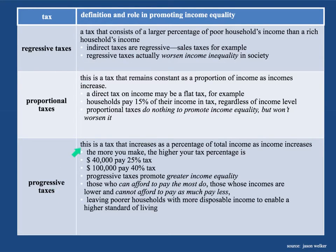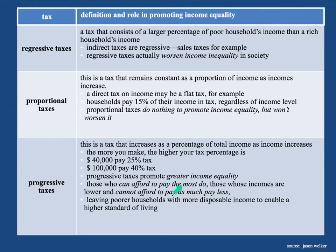Obviously that leaves us with progressive taxes. This is a tax that increases as a percentage of total income as income increases — the more you make, the higher your tax percentage is. Roughly in the United States, if you make $40,000 a year, which is about an average salary for a professional in the U.S., you pay about 25% in tax — federal, state, and local taxes combined. If you make $100,000 a year, you pay 40% tax. So 25% of $40,000 is $10,000 in tax, but if you make $100,000 you pay $40,000 in taxes — four times as much. Progressive taxes do promote greater income equality because those who can afford to pay the most do, and those with lower incomes pay less.